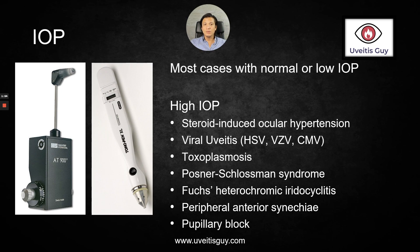Most cases of uveitis have normal or low intraocular pressure, but there are some cases that present with high intraocular pressure caused by steroids, a virus, toxoplasmosis, Posner-Schlossman syndrome, Fuchs, peripheral anterior synechiae, or pupillary block.